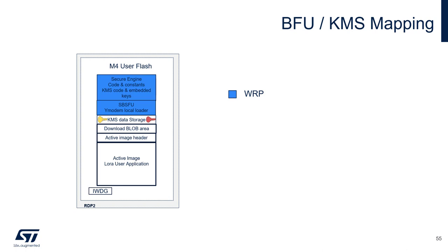Then the secure boot and secure firmware update code that is able to download new firmware, then the KMS data storage used to store the static keys that will be provisioned, and the download blob area that will receive the blob before installation. Next is the active image header for authenticating the application, and the application itself. The two main protections used in this setup are RDP readout protection - ensuring unique boot entry for the secure boot and preventing debugger flash access - and WRP write protection that ensures the immutability of the secure boot and the embedded keys.